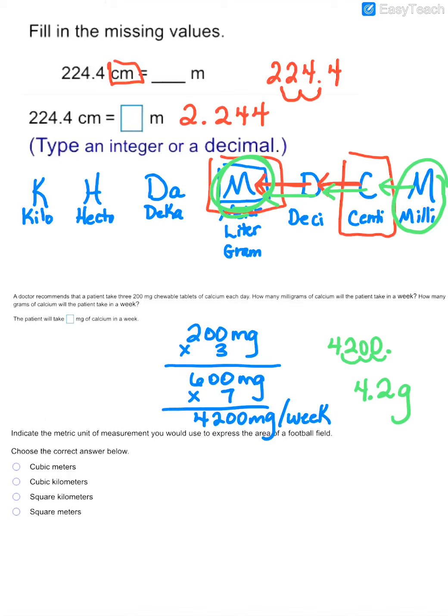On the next question, we are trying to indicate the metric unit of measurement that you would use to express the area of a football field. Now you've got to keep in mind that if we're just measuring distance, we just have a regular unit such as a meter or a centimeter.